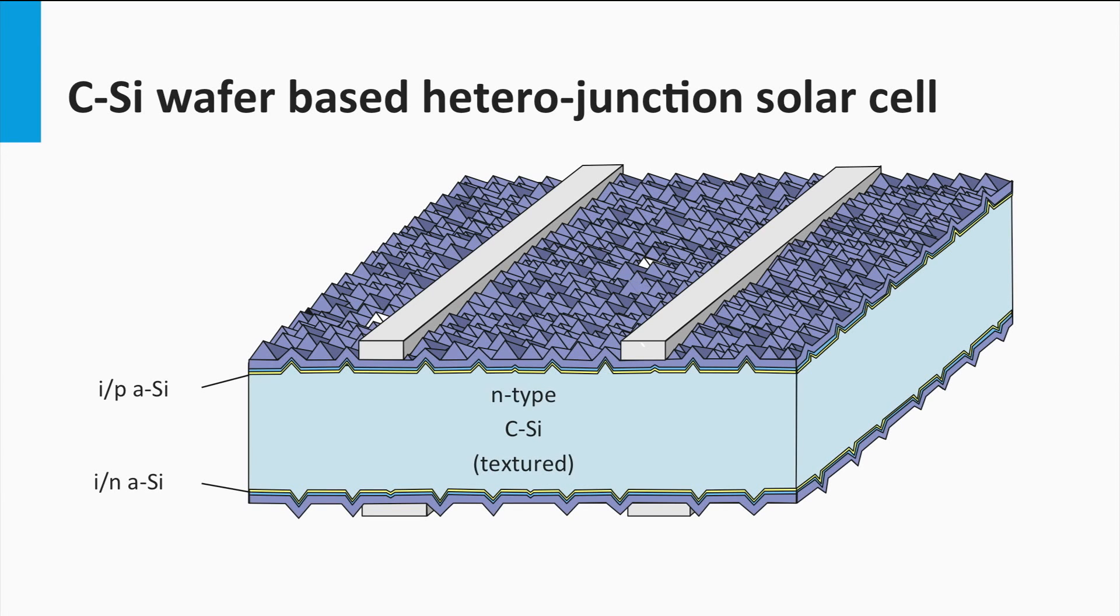An advantage of the HIT cell concept is that it allows to introduce the same contact scheme at the N-type backside. It means that this solar cell can be used in a bifacial configuration. It can collect light from the front and scattered and diffuse light falling on the backside of the solar cell.